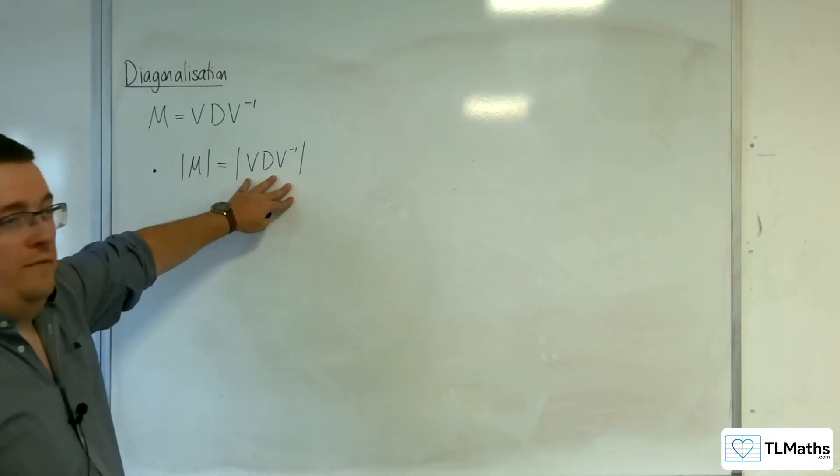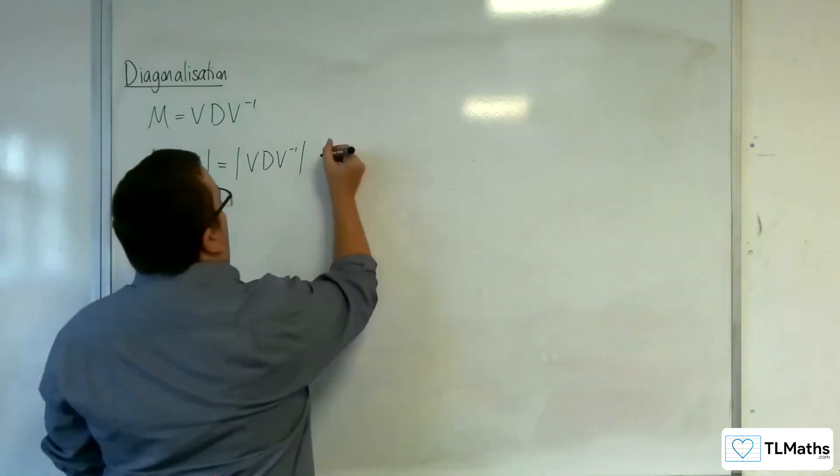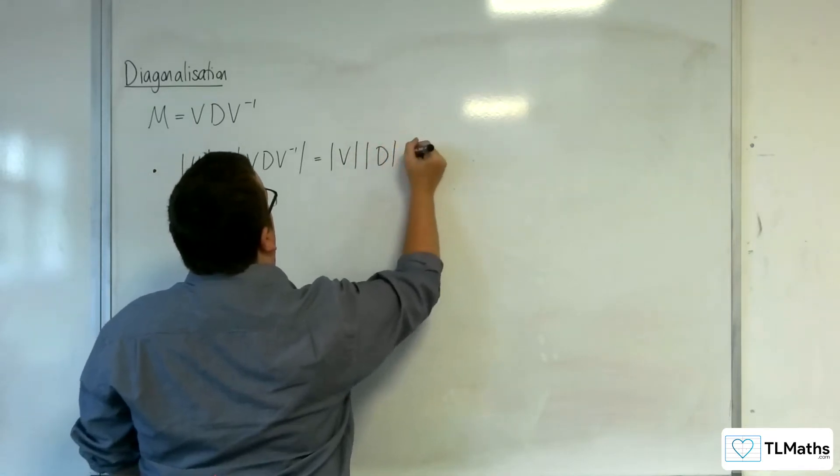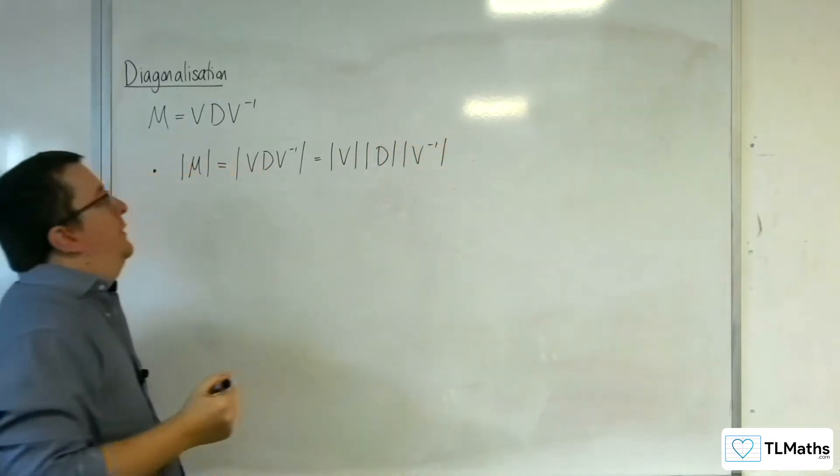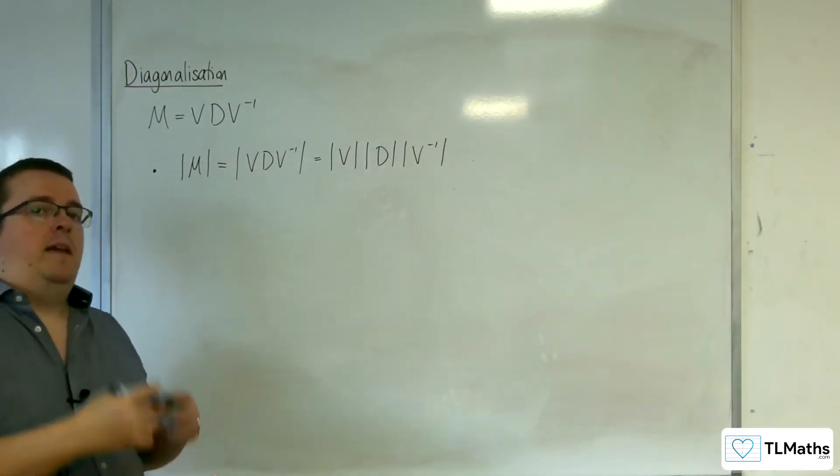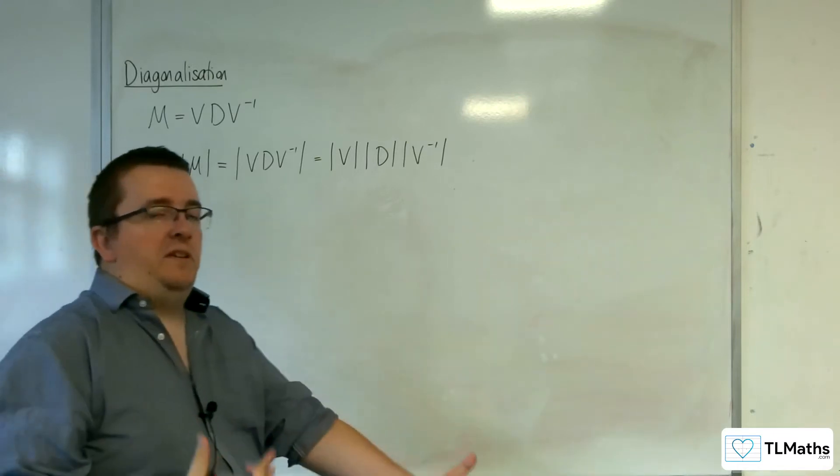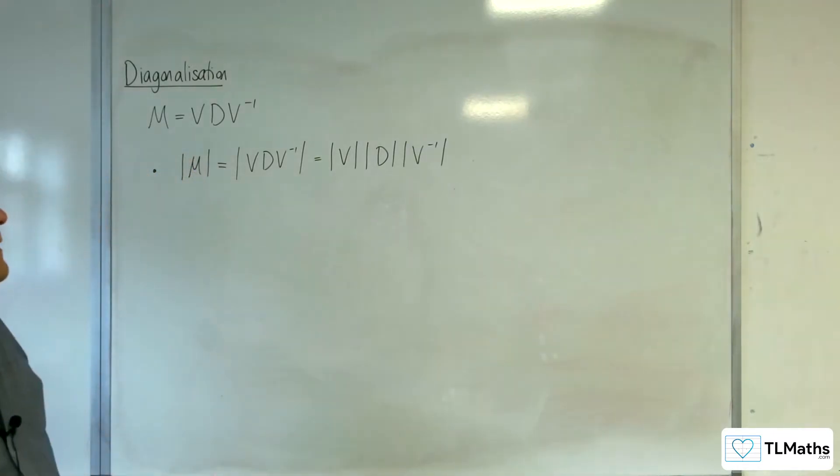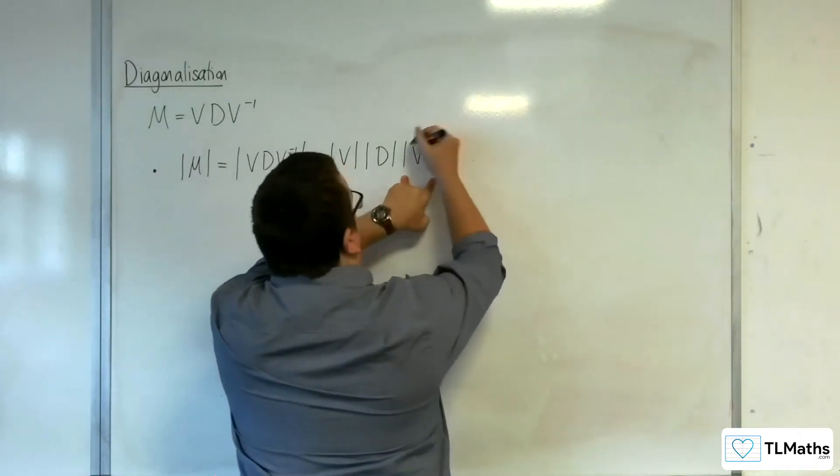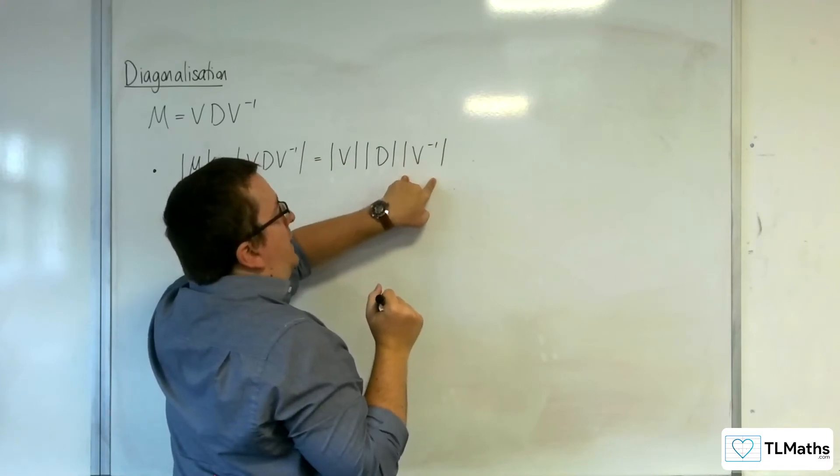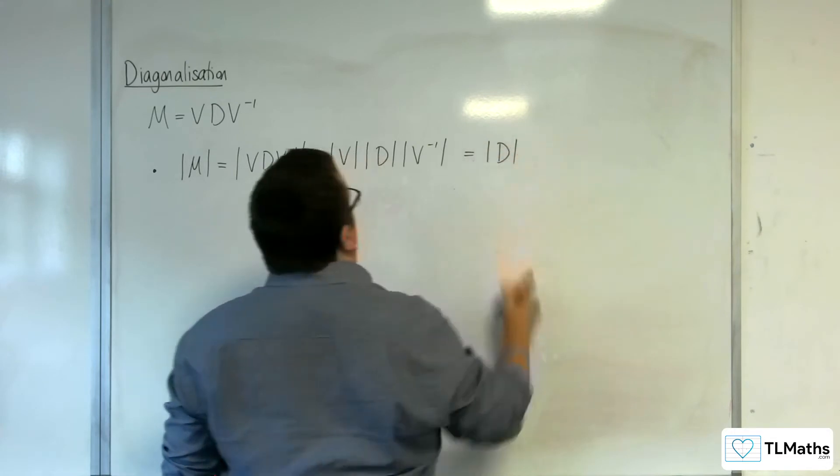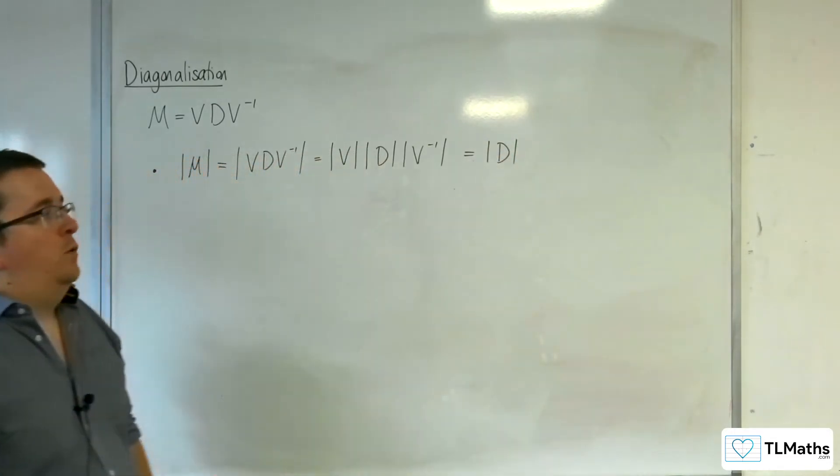Now, if you're finding the determinant of that, that's the same as multiplying together the determinants of each of your interior matrices. We know that the determinant of AB is equal to the determinant of A times the determinant of B. Now, the determinant of V times the determinant of the inverse matrix of V is just equal to 1. And so that's just equal to the determinant of D.